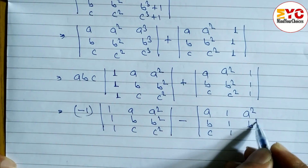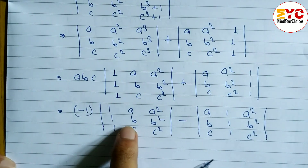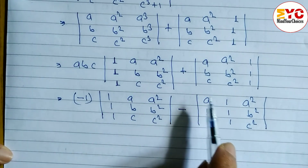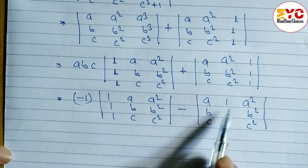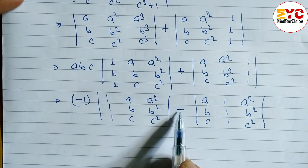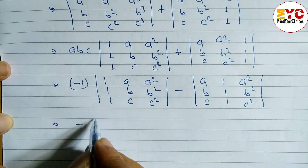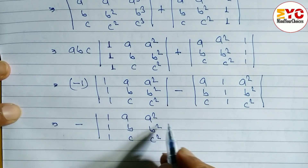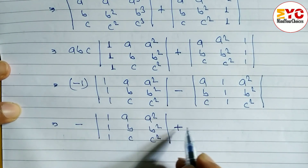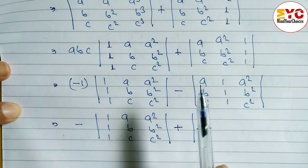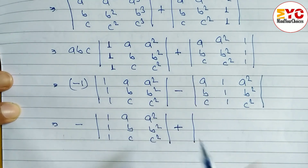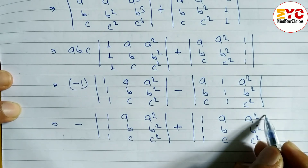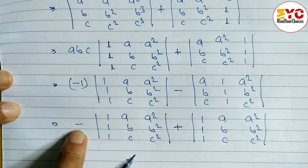It's still not the same — a, b, c is in the second column but we need it in the first column. So we interchange column 1 and column 2 again, which gives another minus sign. Minus times minus gives plus. The result is: 1, 1, 1 in the first row; a, b, c in the second row; a squared, b squared, c squared in the third row. Now you can see both matrices are identical.